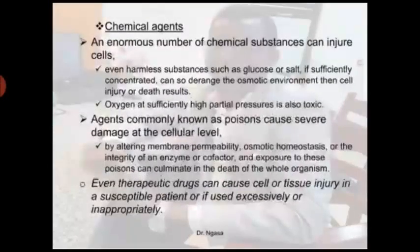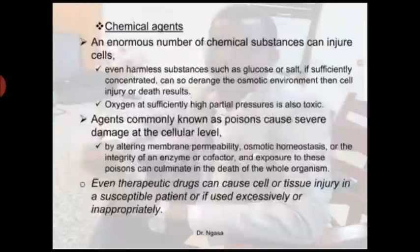Chemical agents are another cause of cell injury. A number of chemical substances can injure a cell — even harmless ones like glucose or salt, if sufficiently concentrated, can disturb the osmotic environment and cause cell injury or death. Oxygen at sufficiently high partial pressure is also toxic. Poisons can cause severe cellular damage by altering membrane permeability, osmotic homeostasis, or the integrity of an enzyme or cofactor, and exposure can culminate in the death of the whole organism. Even therapeutic drugs can cause cell or tissue injury in susceptible patients or if used excessively or inappropriately.